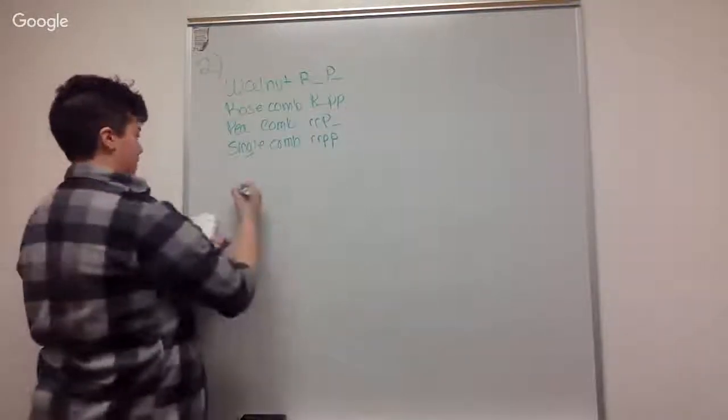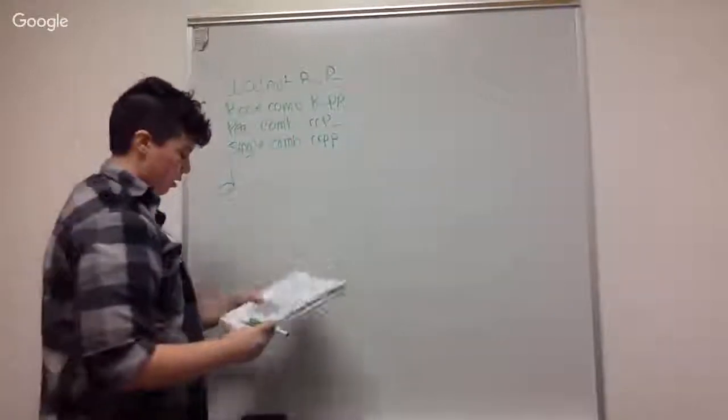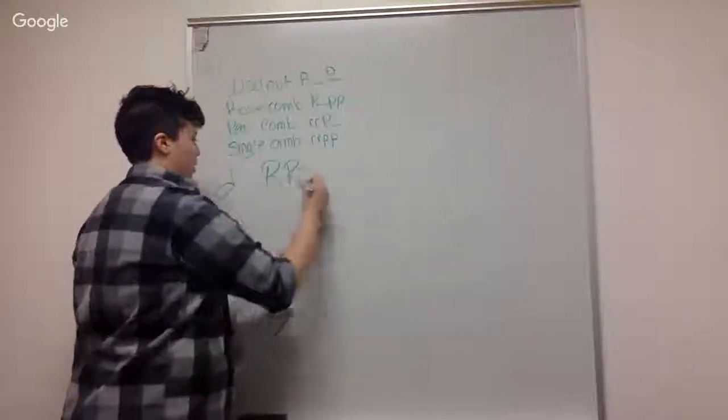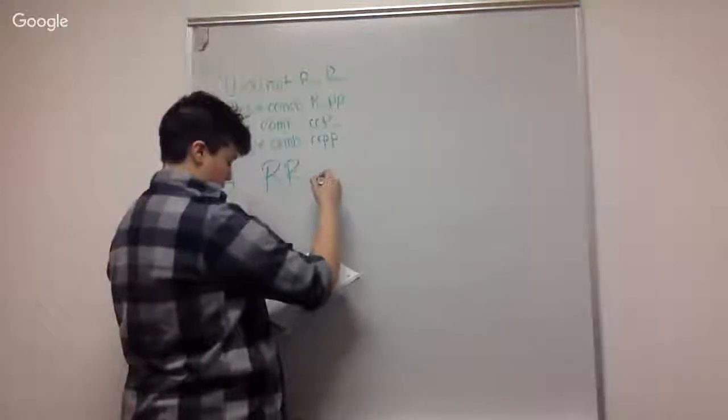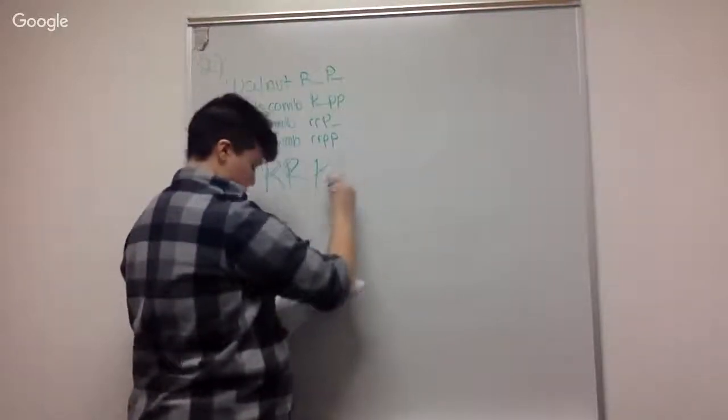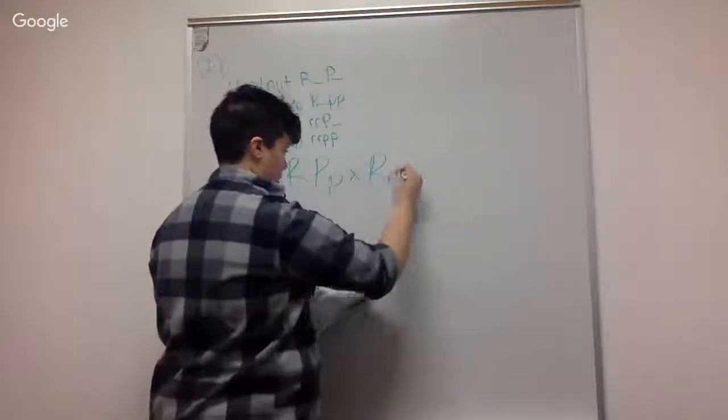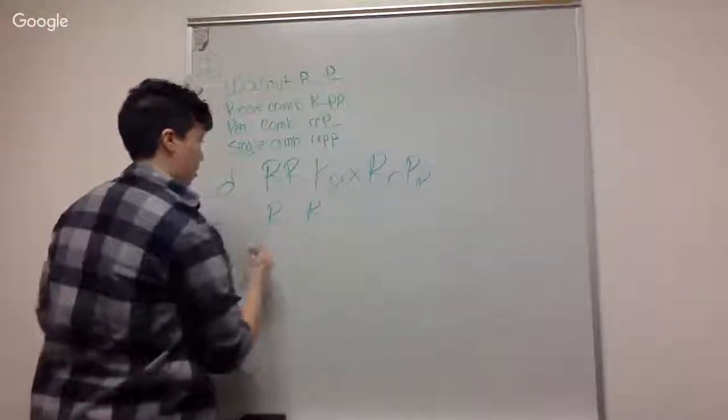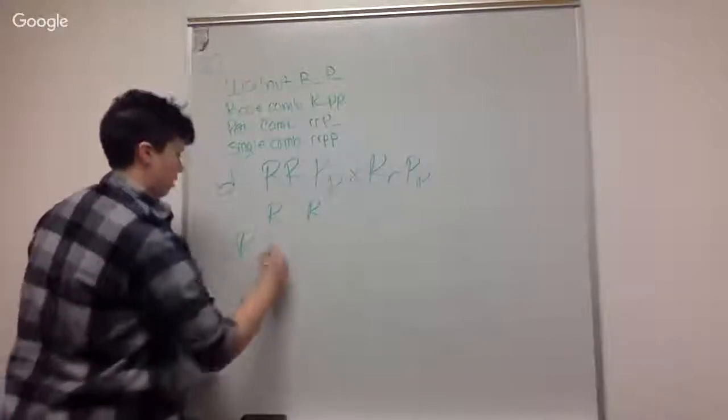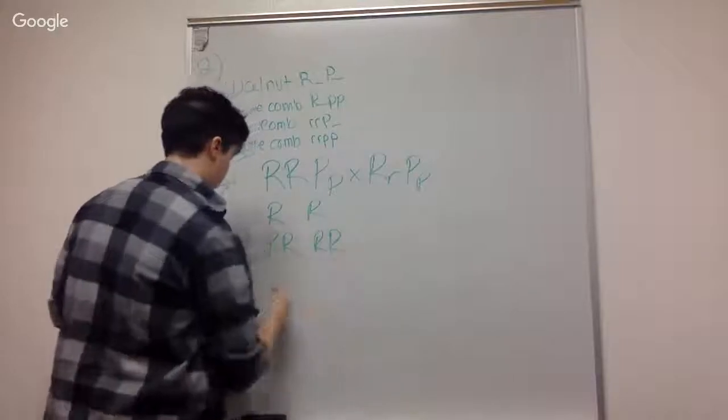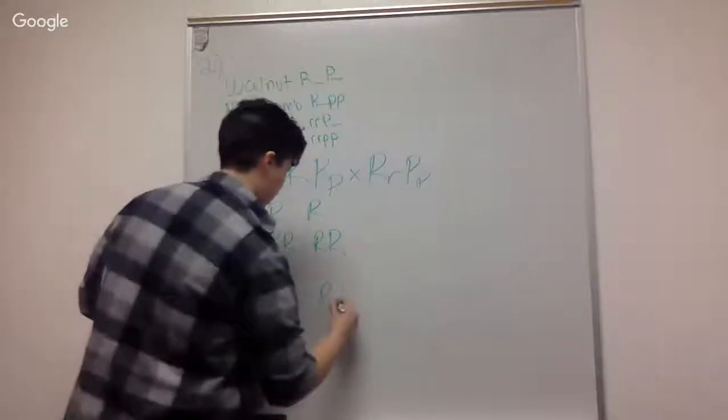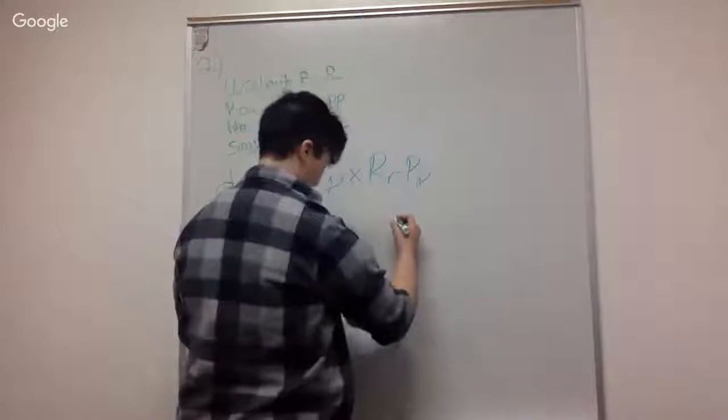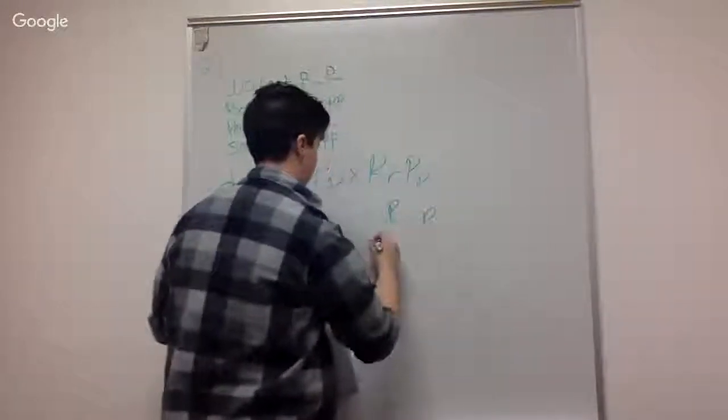And then for D, we're trying to get our three walnut to one rose ratio. And to be able to get that we would have our homozygous dominant R's with a heterozygous P, with a heterozygous R and a heterozygous P.